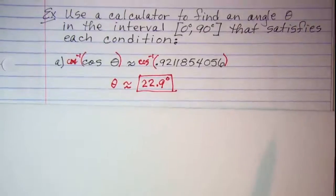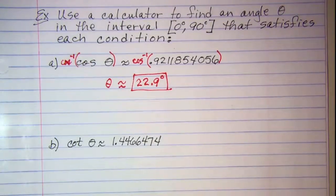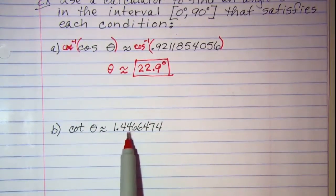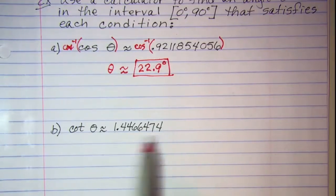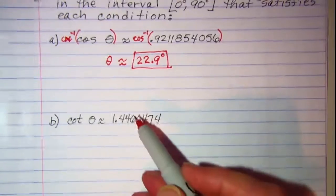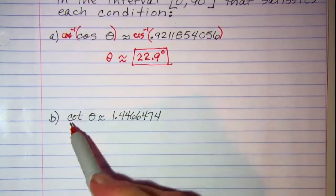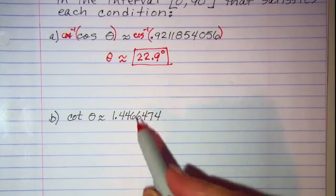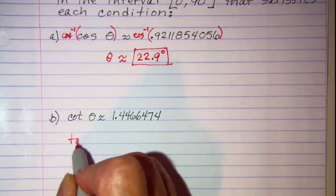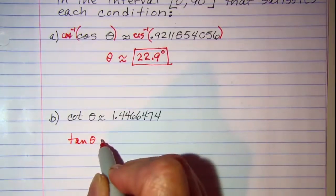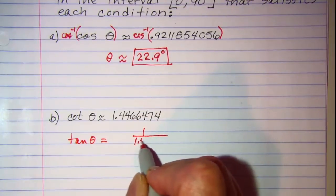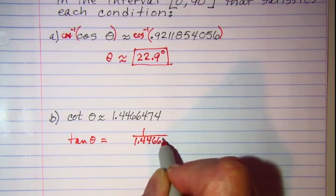Now for our next example, we want to find theta when we know that the cotangent is 1.4466474. Well cotangent is a reciprocal function, so I need to first write this in terms of one of my three main trig functions. So I would write this as tangent theta is equal to 1 divided by 1.4466474.